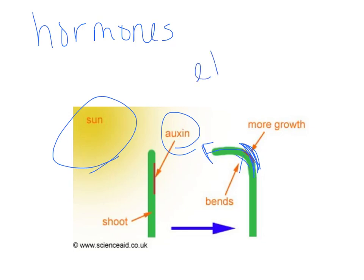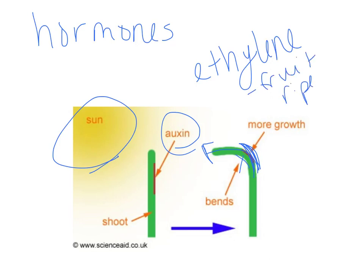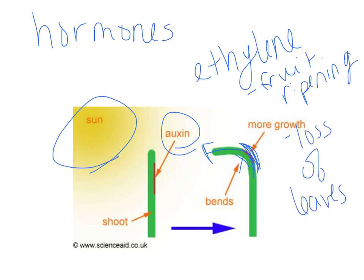Some other hormones that can help control response are things like ethylene. Ethylene is important in fruit ripening — it helps regulate fruit ripening. In the last video we talked about putting produce in brown bags and having it ripen sooner. Ethylene also helps regulate the loss of leaves. You don't have to memorize plant hormones; you just need to be aware that they exist and that these are what cause the change and the response within the plant.